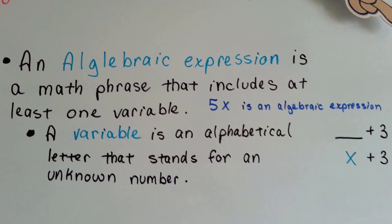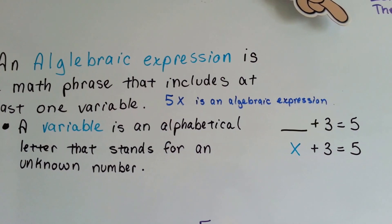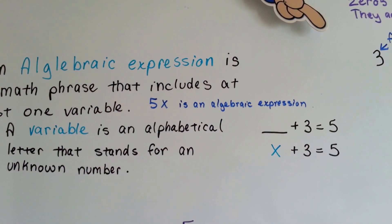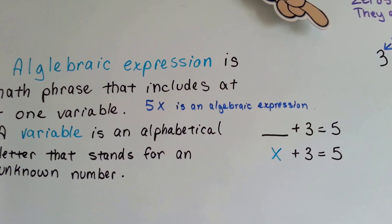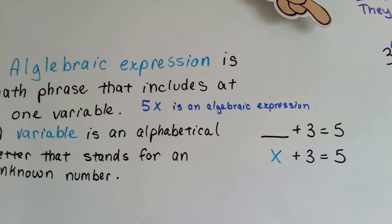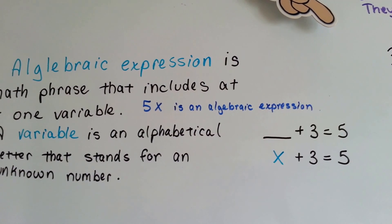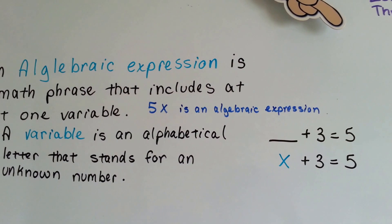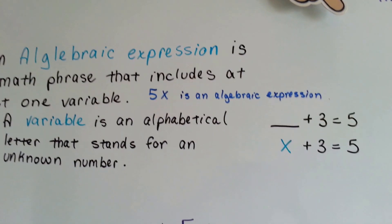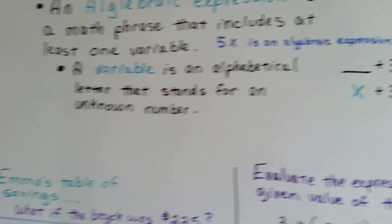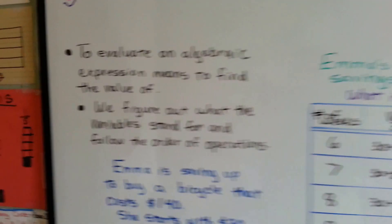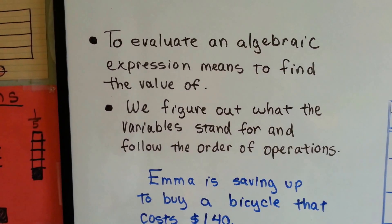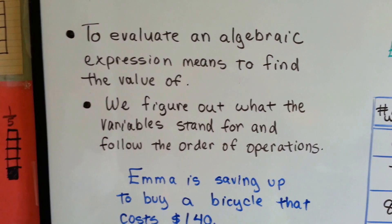A variable is an alphabetical letter that stands for an unknown number. So instead of, like in first grade when we did blank plus 3 equals 5, now — you're more grown up, like adults — we do x plus 3 equals 5. That's the algebra way. To evaluate an algebraic expression means to find the value of it.